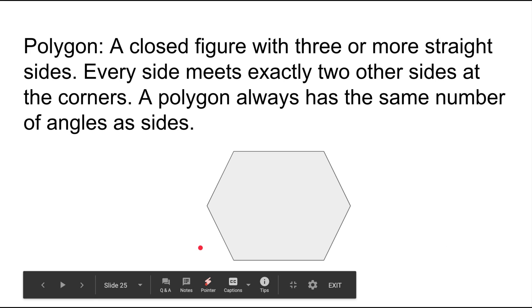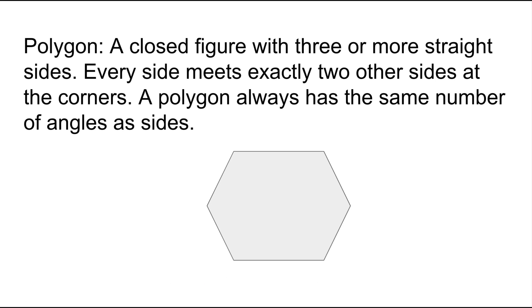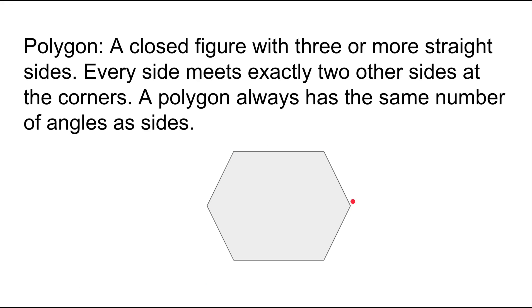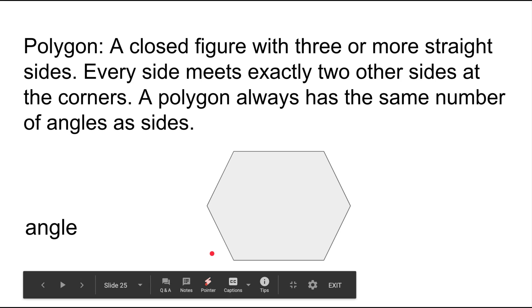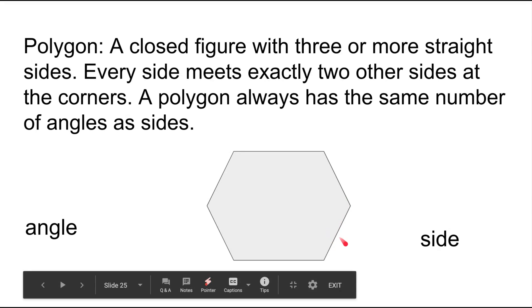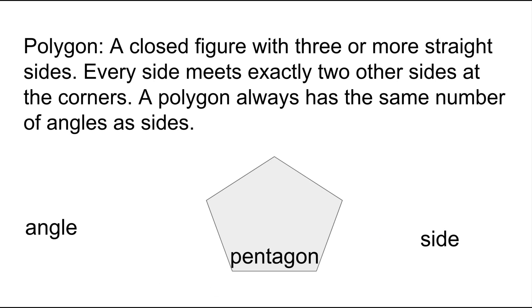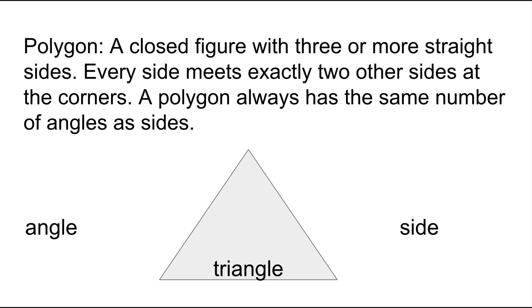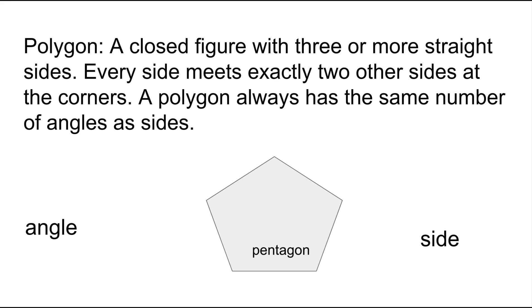Let's do one more shape. Let's count how many angles this polygon has: one, two, three, four, five, six. If it has six angles, we also know that it has six sides. Let's count: one, two, three, four, five, six. This shape is called a hexagon. So we've learned about pentagons, quadrilaterals, triangles, and now hexagons.